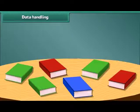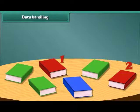Now let's count and arrange these books in the bookshelf. How many red colored books are there? 1 and 2. There are 2 red books.